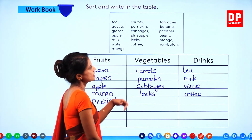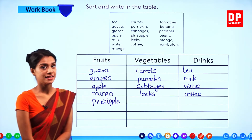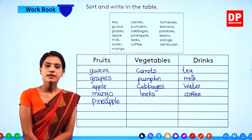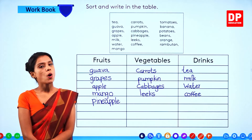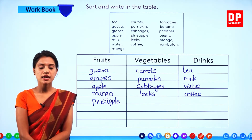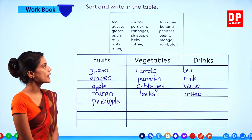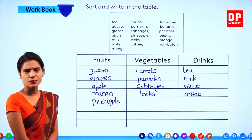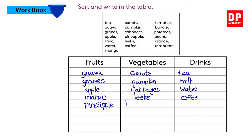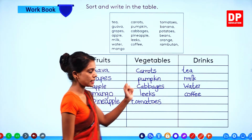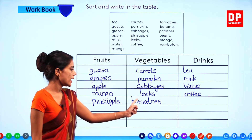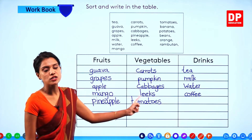Tomato — thakkali. Now tomato children, it's both a fruit and a vegetable. It can come under vegetable or fruit. Teacher is going to write tomatoes under vegetable. You can write it under both. T-O-M-A-T-O-E-S. Tomatoes.